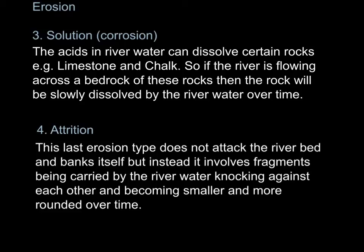Next we have solution, also known as corrosion. The acid in the river water can dissolve certain rocks, e.g. limestone and chalk. So if the river is flowing across a bedrock made of these two types of rocks, then the rock will be slowly dissolved by the river water over time.